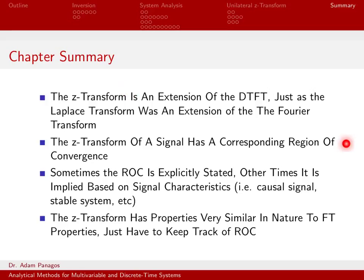We talked about the region of convergence quite a bit. This is just the set of points in the complex plane where your Z-transform is defined, and you always have to state what it is. Otherwise, your Z-transform does not uniquely determine the time domain signal. Sometimes you do explicitly state what the region of convergence is — you actually write down the magnitude of Z greater than alpha, or the magnitude of Z less than alpha, something like that.